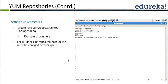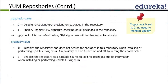By default, YUM will follow the order — it will search the first repository, and if not available, it can search other repositories as well. You can have multiple repositories; you just have to configure it. You can configure the repository, enable it or disable it, and set priority configurations.